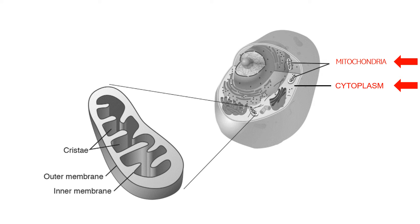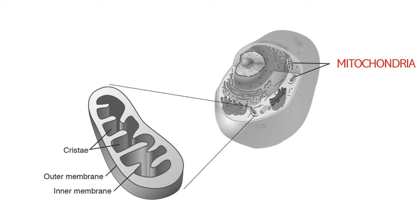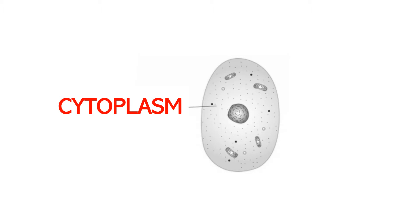The biochemical processes during cellular respiration occur in the cytoplasm first, then in the mitochondria. The mitochondria produce chemical energy in the form of ATP from these biochemical processes, according to the National Human Genome Research Institute. Mitochondrial DNA is inherited only from the mother. The cytoplasm is where the first biochemical process, glycolysis, occurs during cellular respiration.